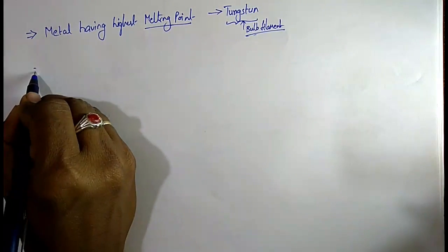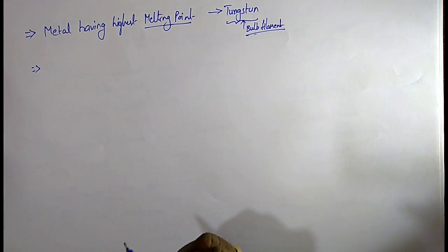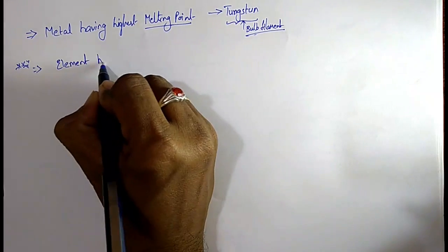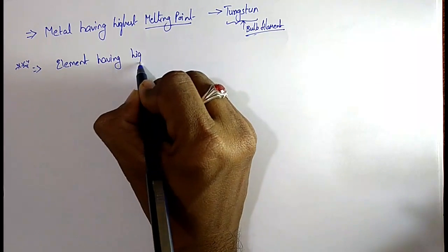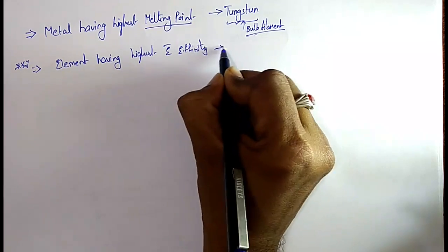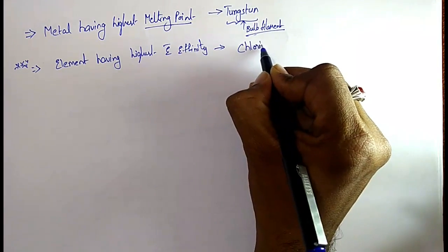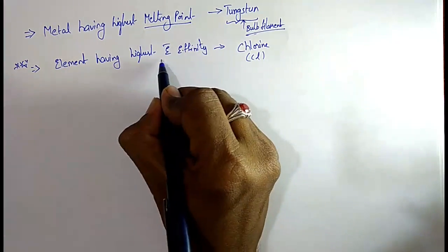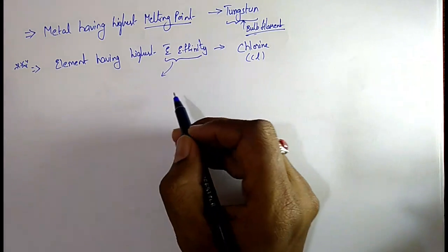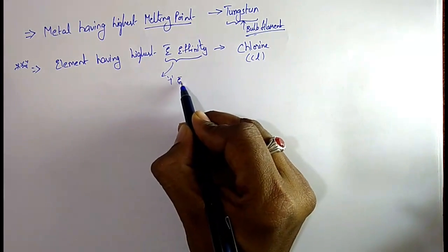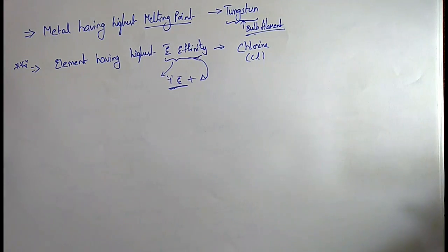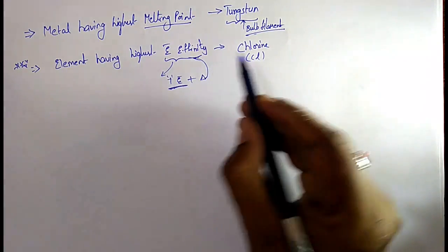The next one: element having the highest electron affinity — very important. The element is chlorine (Cl). Electron affinity is the energy released whenever we add one electron to an atom. The element having the highest electron affinity is chlorine.